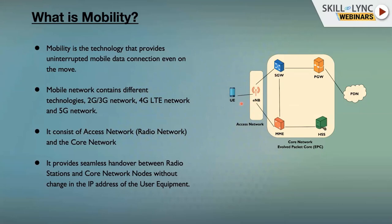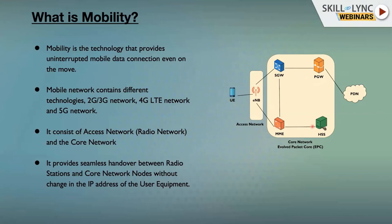Consider you are in Bangalore and you turn on your handset, or UE — the technical term from the specification. The UE will latch on to the strongest radio network available. Let's say it connects to this eNodeB. Based on the strength and the subscription, the UE needs to get an IP address in order to access the internet. The IP address is assigned by the core network — specifically, the PDN gateway or PGateway assigns the IP address to the UE.